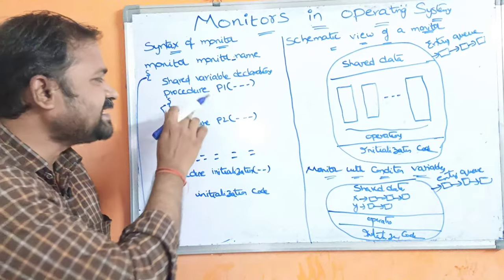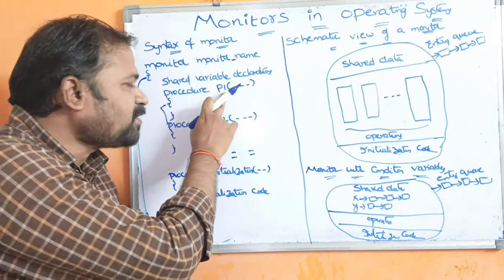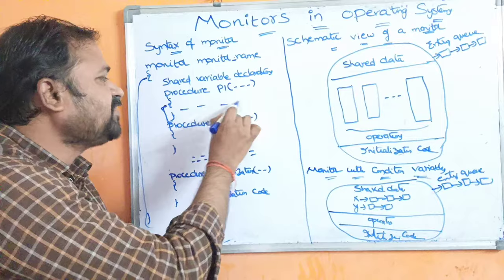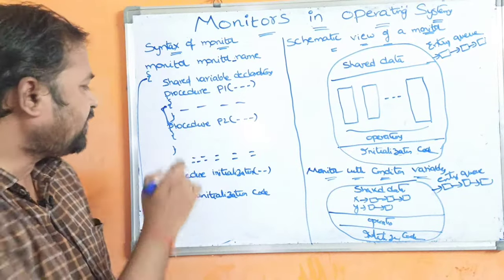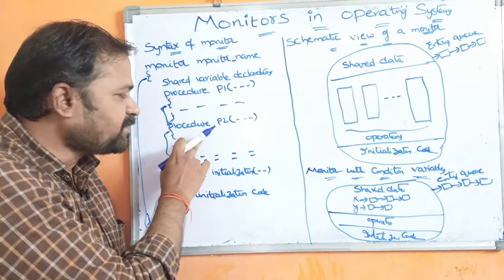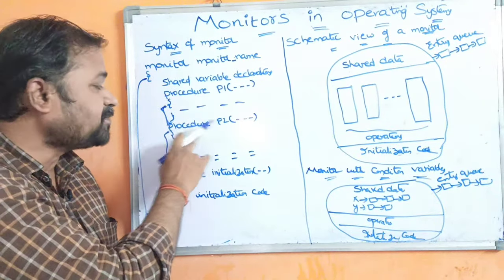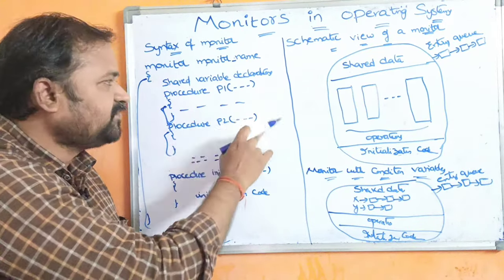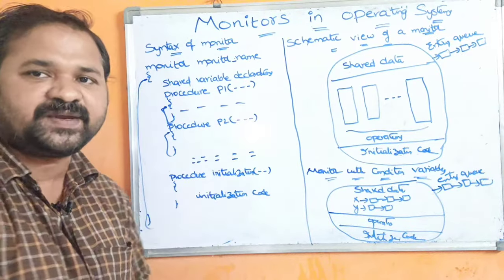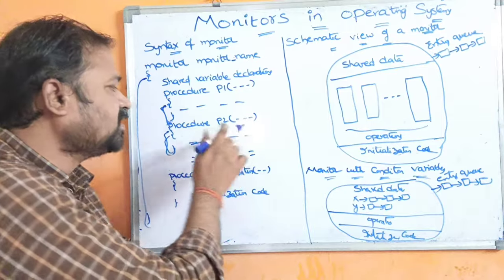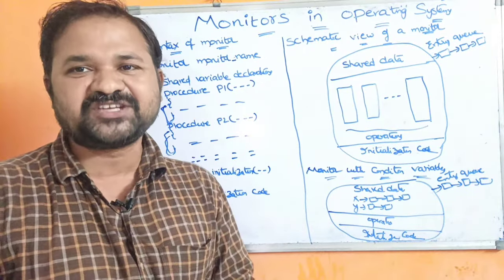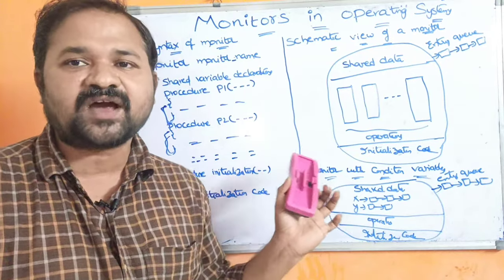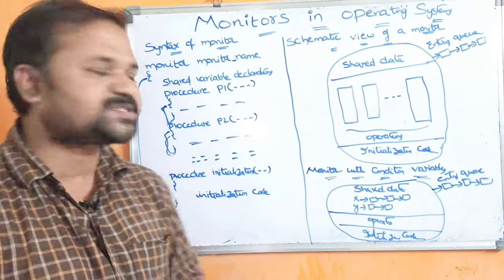Next, a procedure is defined with the help of a keyword 'procedure', followed by the name of the procedure. Within the parentheses, we can have a number of arguments, and within the curly braces, we can define the body for the procedure. Likewise, we can define n number of procedures. A function is useful in order to perform a specific task, so likewise, in order to perform operations on the shared variables, we can use these procedures.